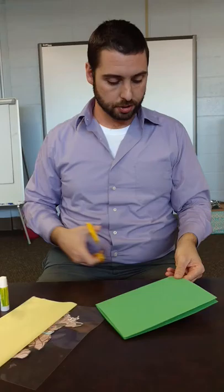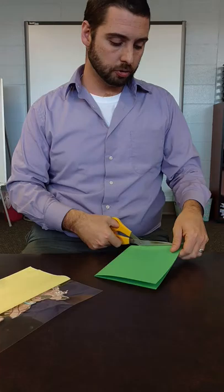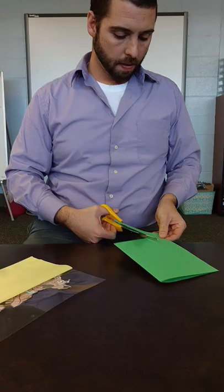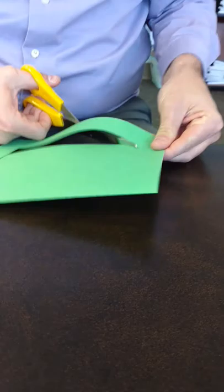Now, where the fold is, I'm going to take my scissors, and I'm going to cut in such a way that what I do to one side, I do to another. And what I'm attempting to do is cut out the center of the construction paper.